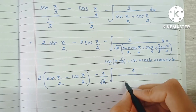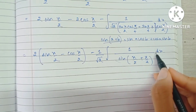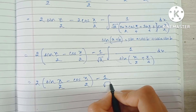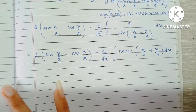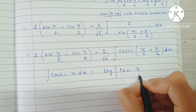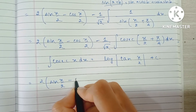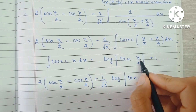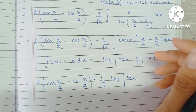The denominator becomes sin(x/2 + π/4), and taking its reciprocal gives cosec(x/2 + π/4). We apply the direct formula: the integral of cosec(x) dx = log|tan(x/2)| + C. So our x here is (x/2 + π/4), meaning x/2 becomes x/4 + π/8 after dividing by 2 per the formula.